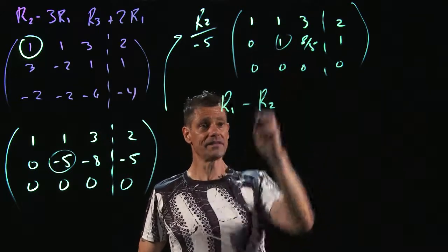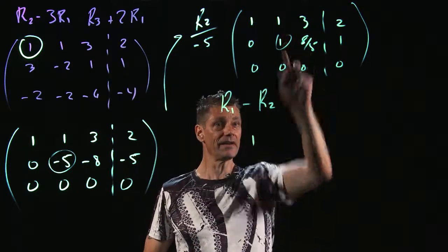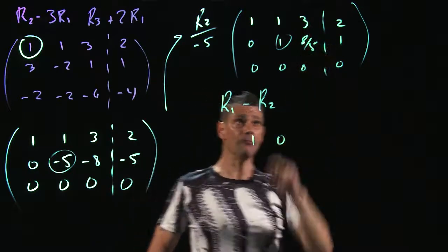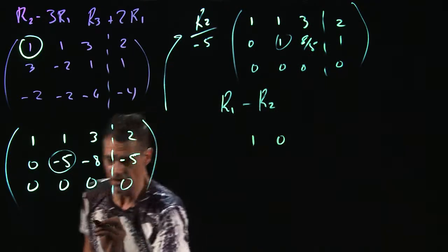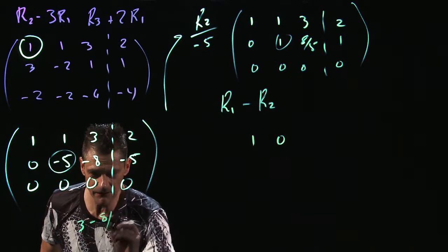So 1 minus 0 is still 1. 1 minus 1 is 0. 3 minus 8 fifths. OK. So we've got to have a little scratch paper here. 3 minus 8 fifths.